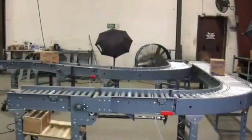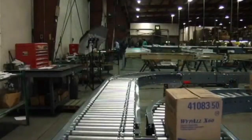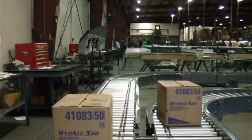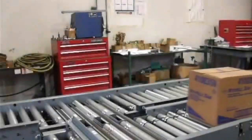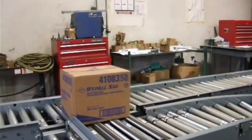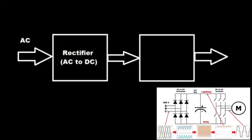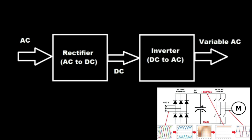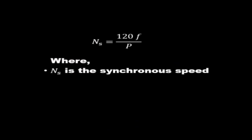VFD is based on three main components: the converting circuit, the filtration circuit, and the inverting circuit. Now, what is the converting circuit used in a VFD? In the converting section, the three-phase supply is converted into DC.